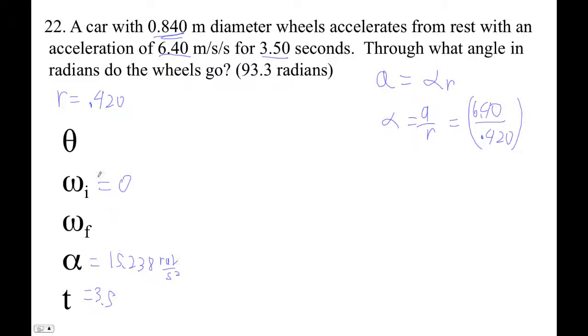Okay, so now we've got three things and we want to find theta. We could use s equals ut plus one-half at squared, which looks like theta. So it's going to be 0 times 3.5 plus one-half times 15.238 times 3.5 squared. So 0.5 times the answer I just got times 3.5 squared equals 93.3 radians.